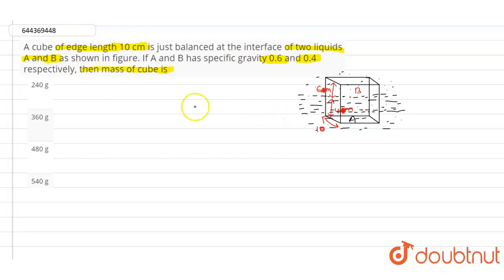The edge length is given as 10 centimeters. The level of the B liquid is 6 centimeters and the level of the A liquid is 4 centimeters. The specific gravity is given as 0.6 for liquid A and 0.4 for B.